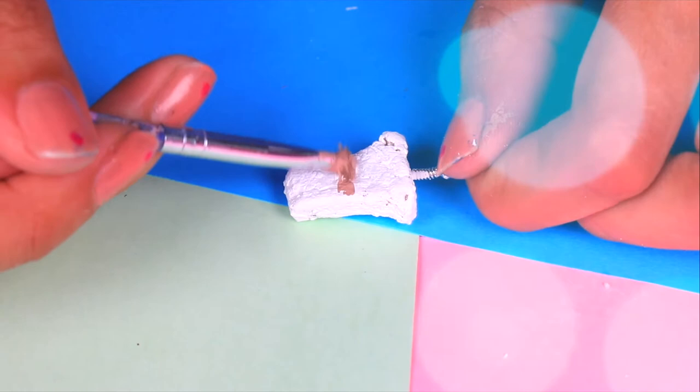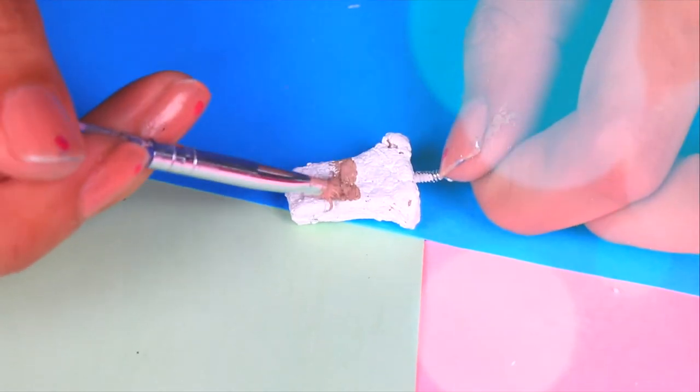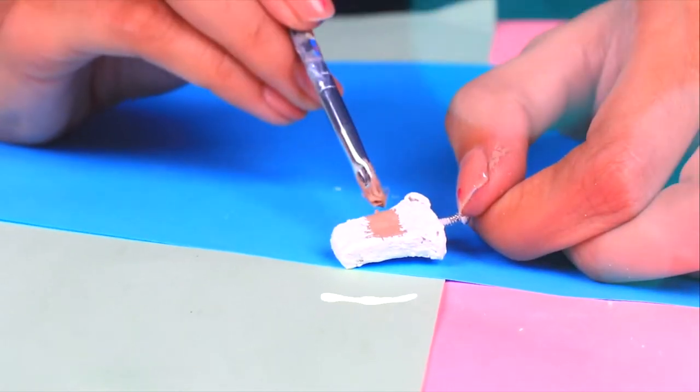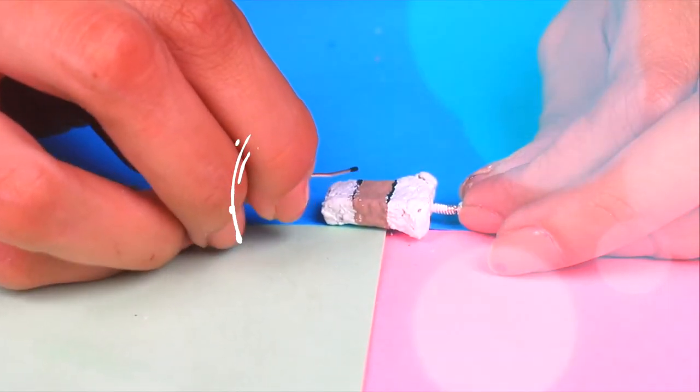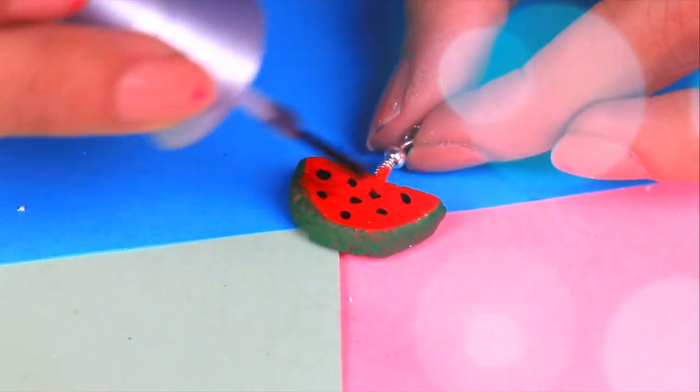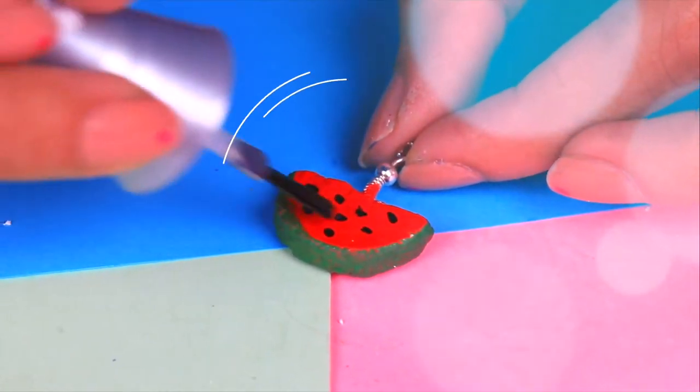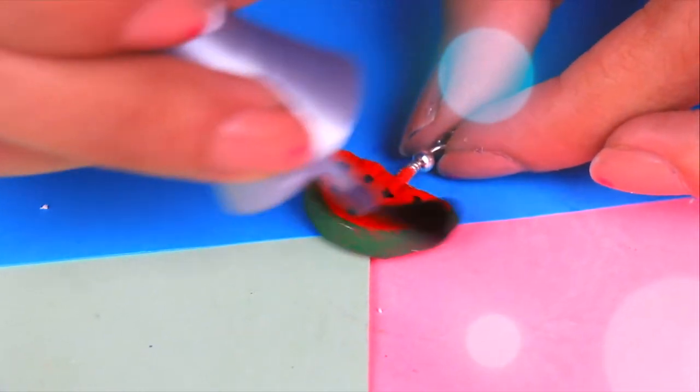Now it's time for the coffee cup. We will draw a stripe with light brown acrylic paint. Remember to draw them on both sides. And then we will draw the edges with black so it looks very cute. Finally, let's apply clear nail polish to this and all the pieces that we made so they look beautiful and shiny.